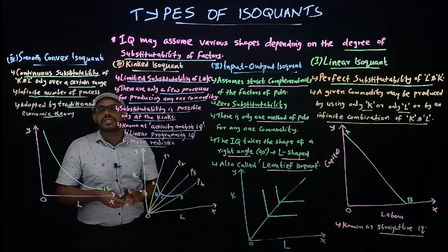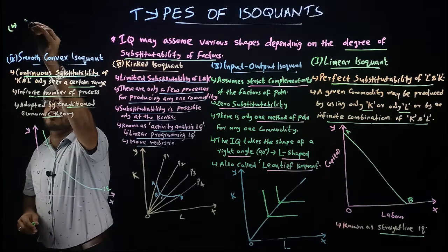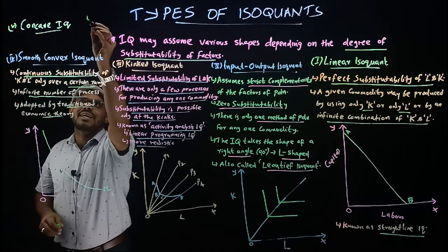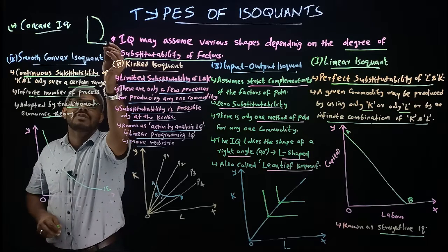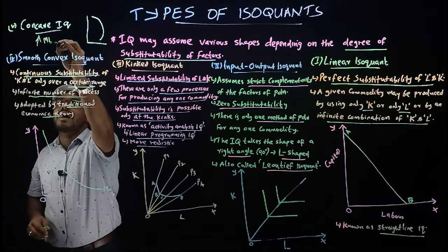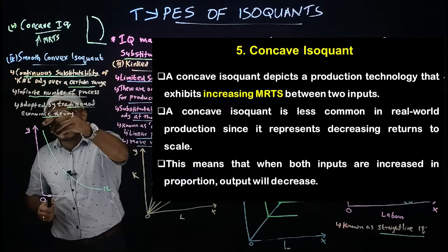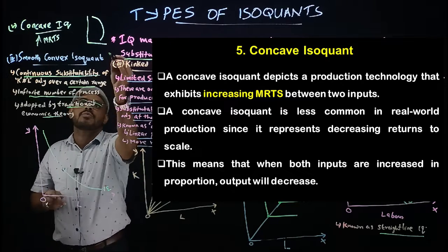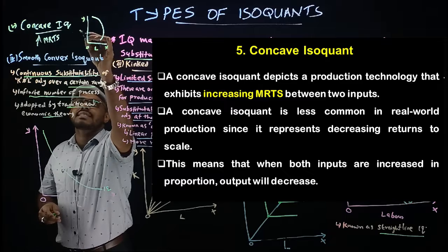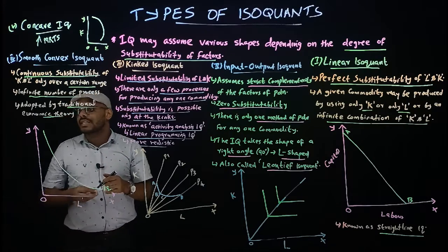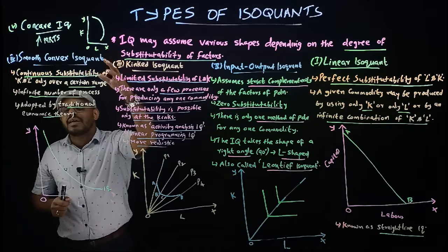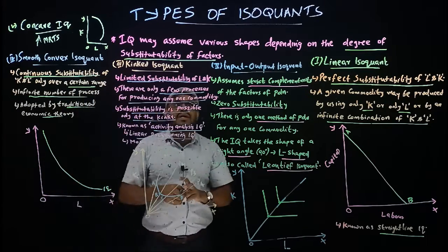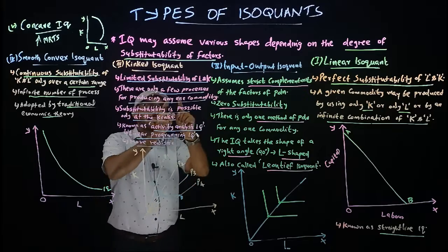There is also a fifth type — the concave isoquant. Unlike the convex isoquant which has diminishing MRTS, the concave isoquant has increasing marginal rate of technical substitution. On the diagram, the x-axis is labor and the y-axis is capital. The concave shape represents increasing returns and is considered unrealistic in practice.